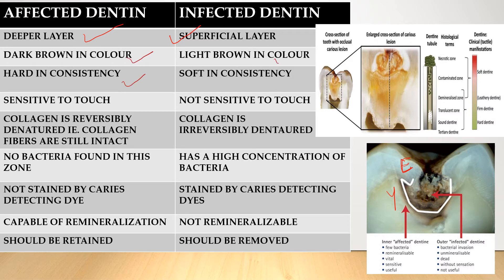The next difference is sensitivity to touch. Affected dentine, being the deeper layer present beneath infected dentine, is sensitive to touch. Infected dentine is not sensitive to touch. Clinically, when you remove enamel caries and move into the dentine, you first remove infected dentine — the patient won't feel pain. But when you reach affected dentine, the patient will feel pain because you are approaching the pulp. So the patient is sensitive at affected dentine and not sensitive at infected dentine.